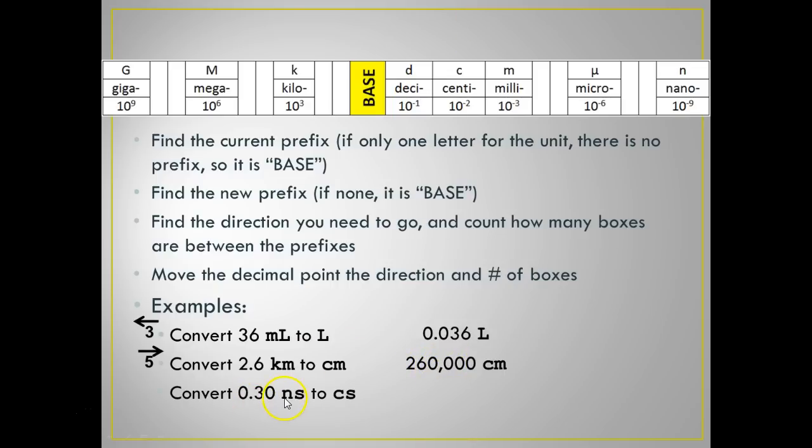Let's try another one. 0.3 nanoseconds to centiseconds. So, I'm going from nano to centi, which is one, two, three, four, five, six, seven to the left. Now, I'm going to take that decimal point there, and I'm going to move it one, two, three, four, five, six, seven to the left, which leads me to 0.00000003 centiseconds. That's it.